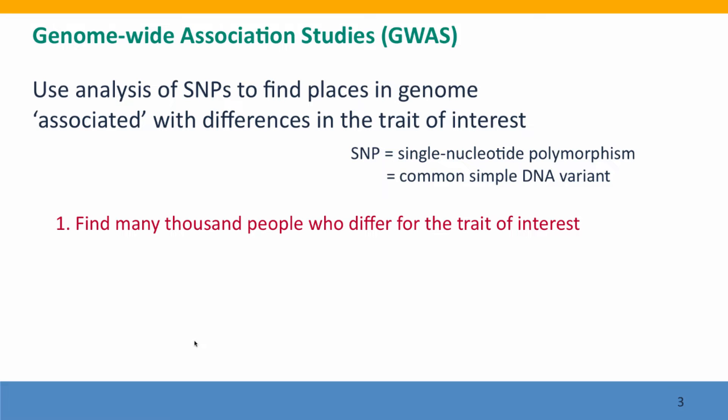The first step in carrying out a genome-wide association study is to find lots of people who differ for the trait that you're interested in. To do a good study, you need thousands of people. Say you're interested in height, which is the first example we're going to use. You want to find thousands of people who are either noticeably short or noticeably tall for your study.